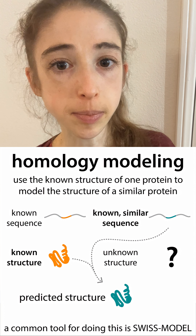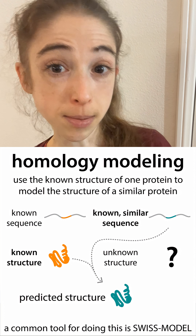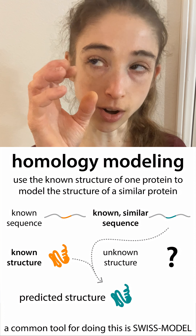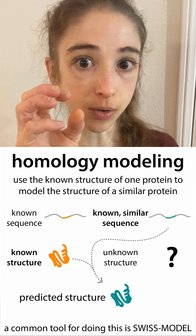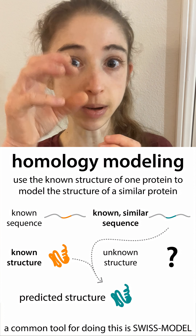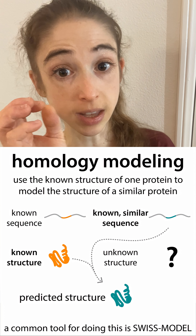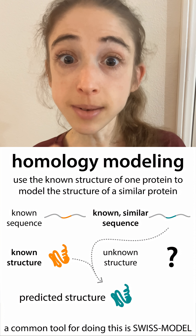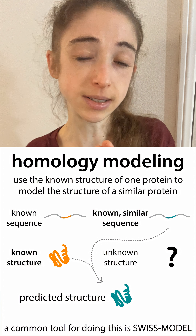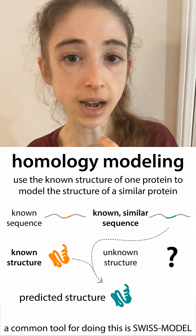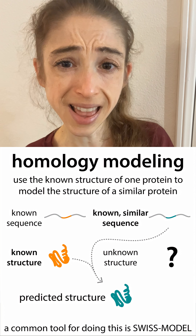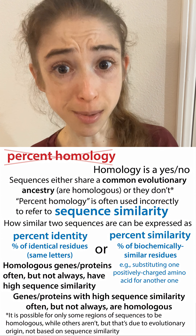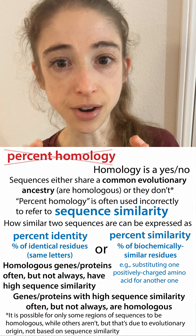This can be confused because people often talk about homology modeling, where you take two similar-looking proteins and, knowing the structure of one, predict the structure of the other based on the homologous one. Sometimes the protein used really is homologous, but sometimes it's not actually. So the term can be kind of misused that way.